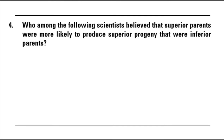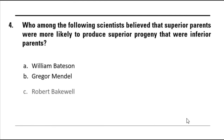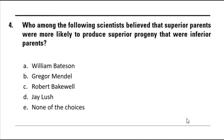Question number 4: Who among the following scientists believed that superior parents were more likely to produce superior progeny than were inferior parents? Letter A: William Bateson. Letter B: Grigore Mendel. Letter C: Robert Bakewell. Letter D: Jay Lash. And letter E: none of the choices.